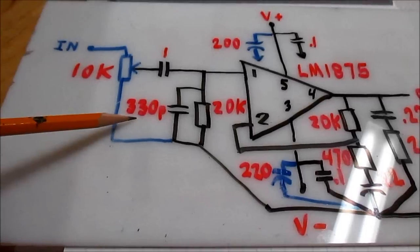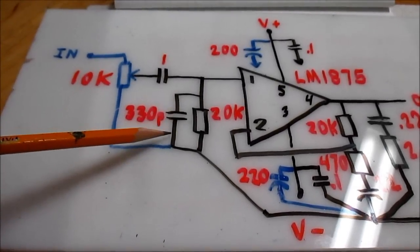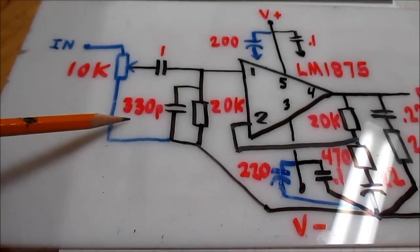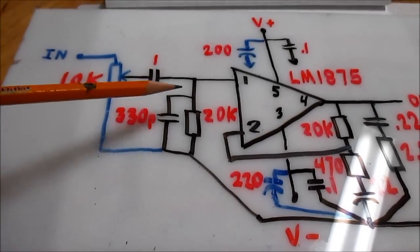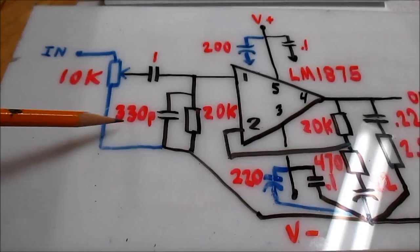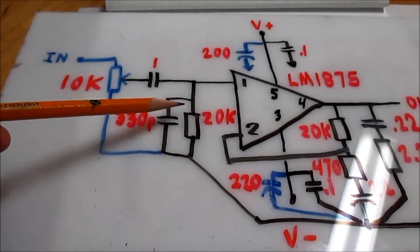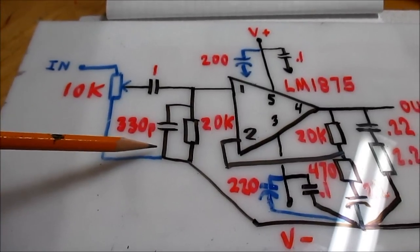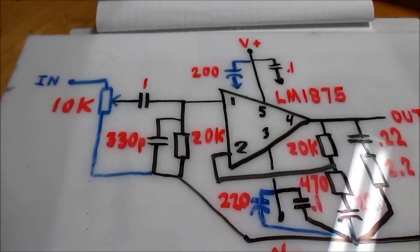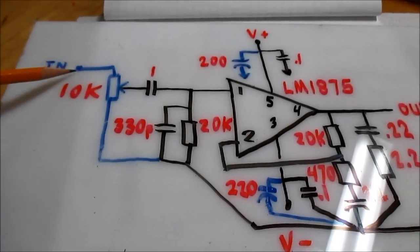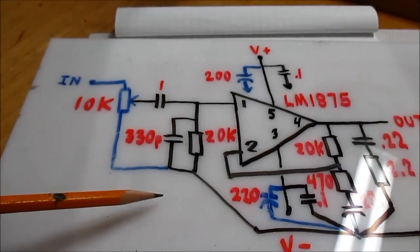I also added this. It's not optional. I don't consider this optional, but they usually don't put them on the datasheets. I put a small value, this is a 330 picofarad capacitor, across the input. What that does, when there's nothing connected, it shunts high frequencies down.